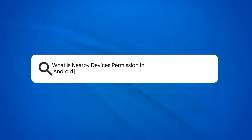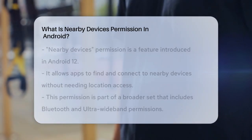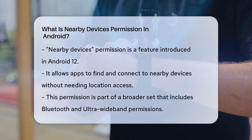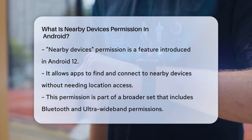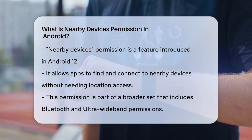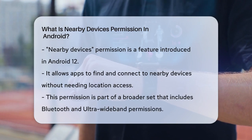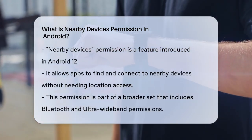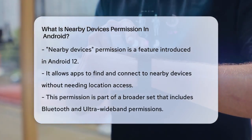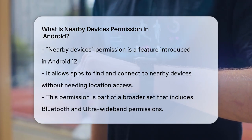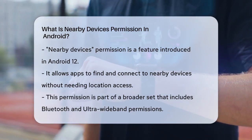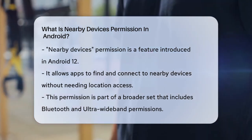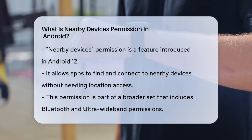What is nearby devices permission in Android? Have you ever wondered why some apps on your Android device ask for a nearby devices permission? Let's break it down. This permission is part of a group introduced in Android 12, which also includes permissions for Bluetooth and ultra-wideband devices. Essentially, it allows apps to find, connect to, and determine the position of other nearby devices without necessarily needing your location information.